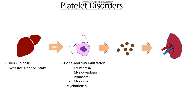We could also have scarring of the bone marrow matrix in a condition known as myelofibrosis. Other things include aplastic anemia, where an infection or a bone marrow disorder causes all cell lineages to become non-functional. Lastly, if we don't have the substances to form our cells — including things like B12 and folate — then we're not going to be able to form our platelets.